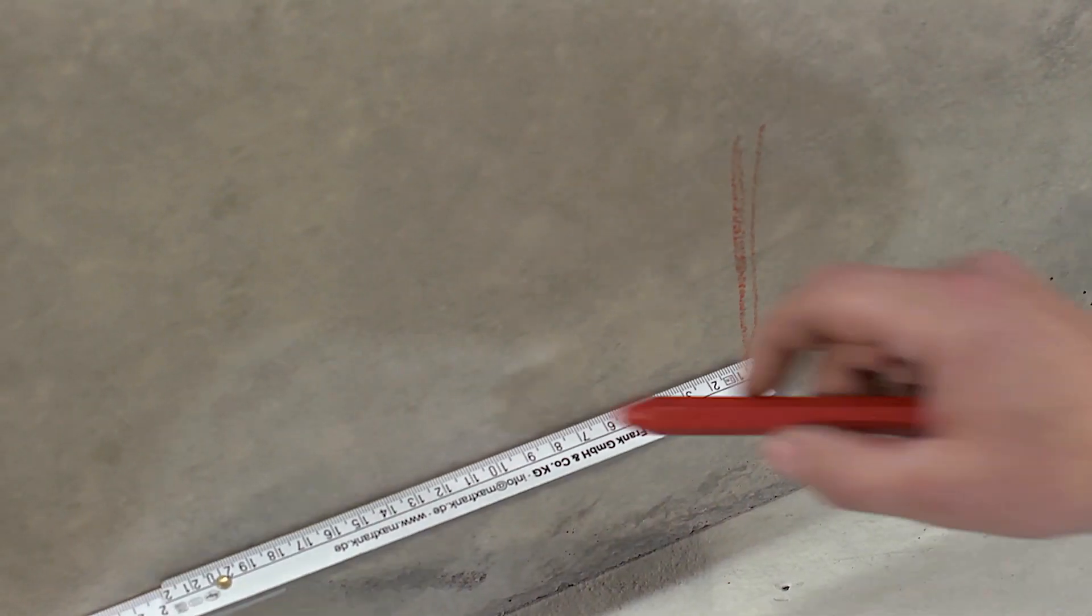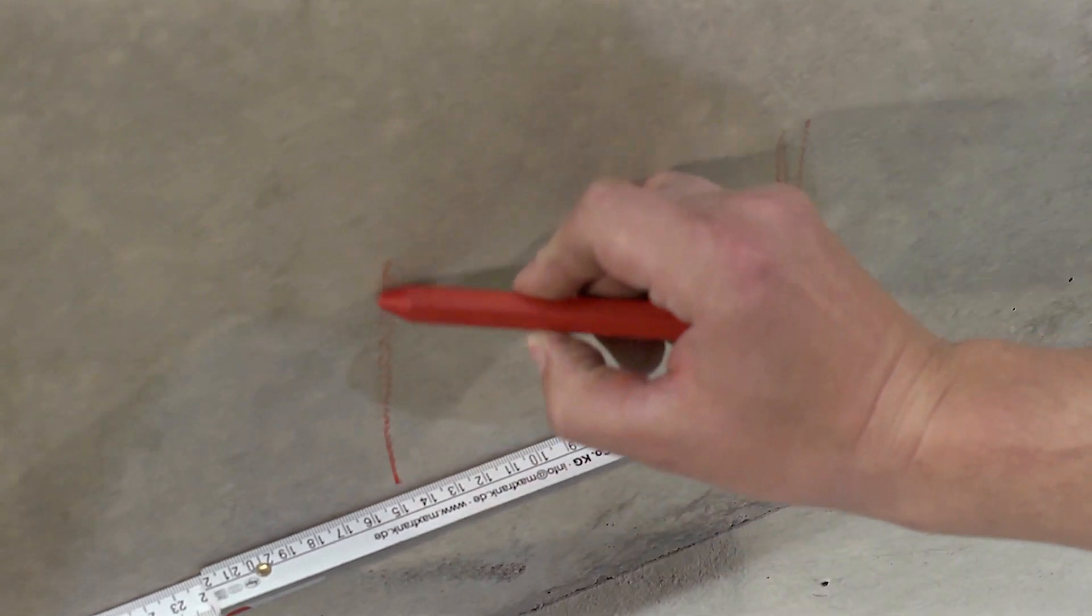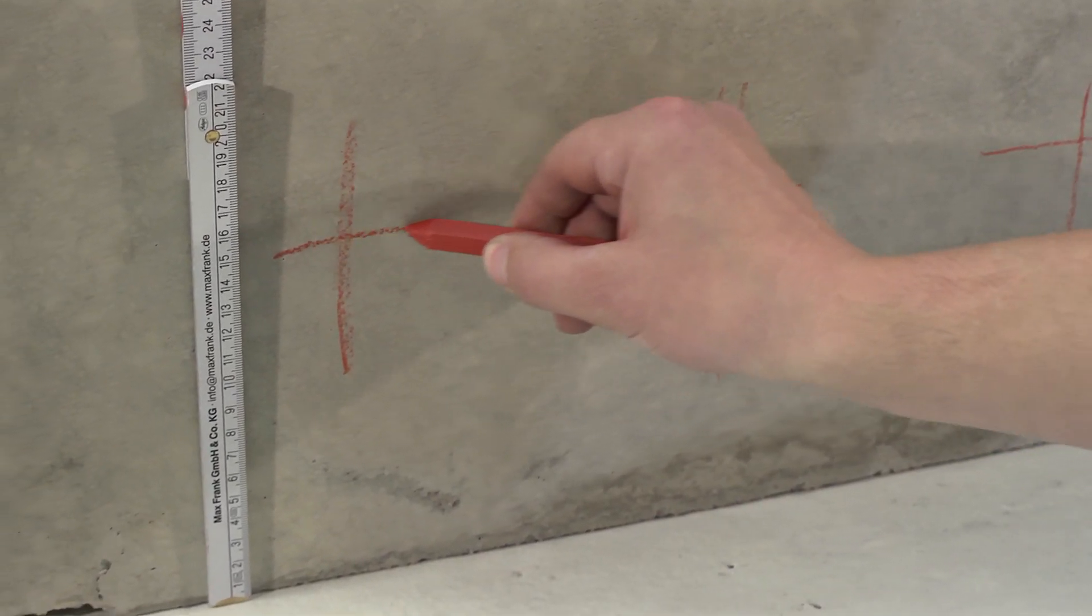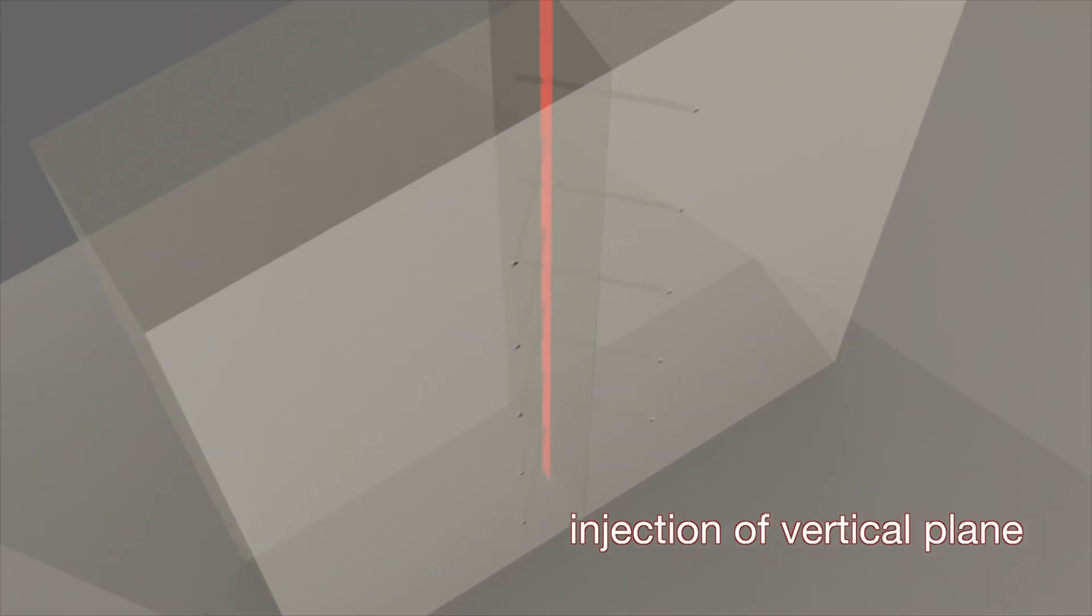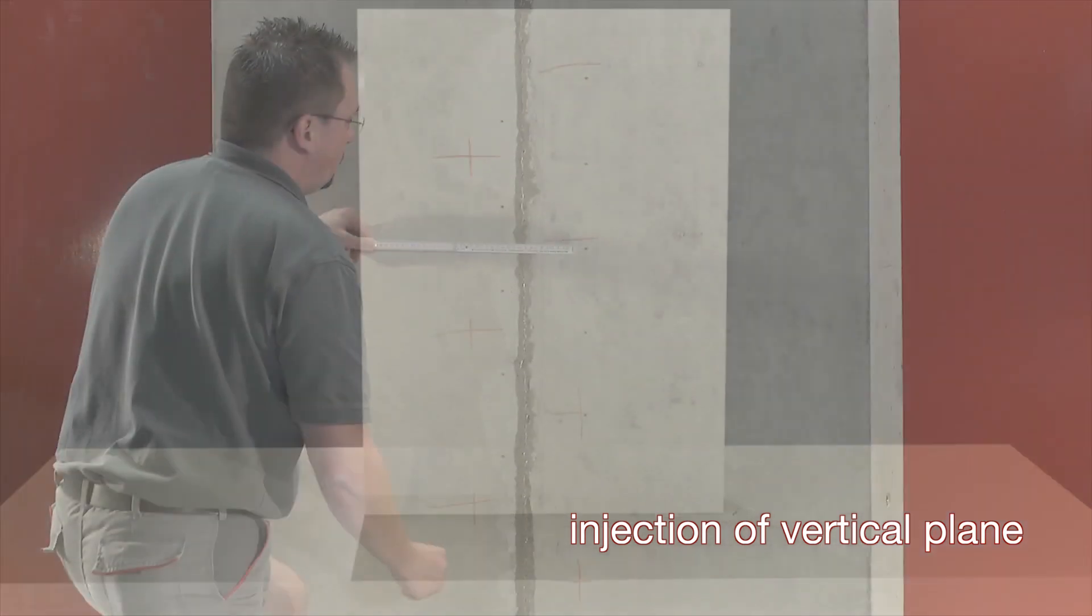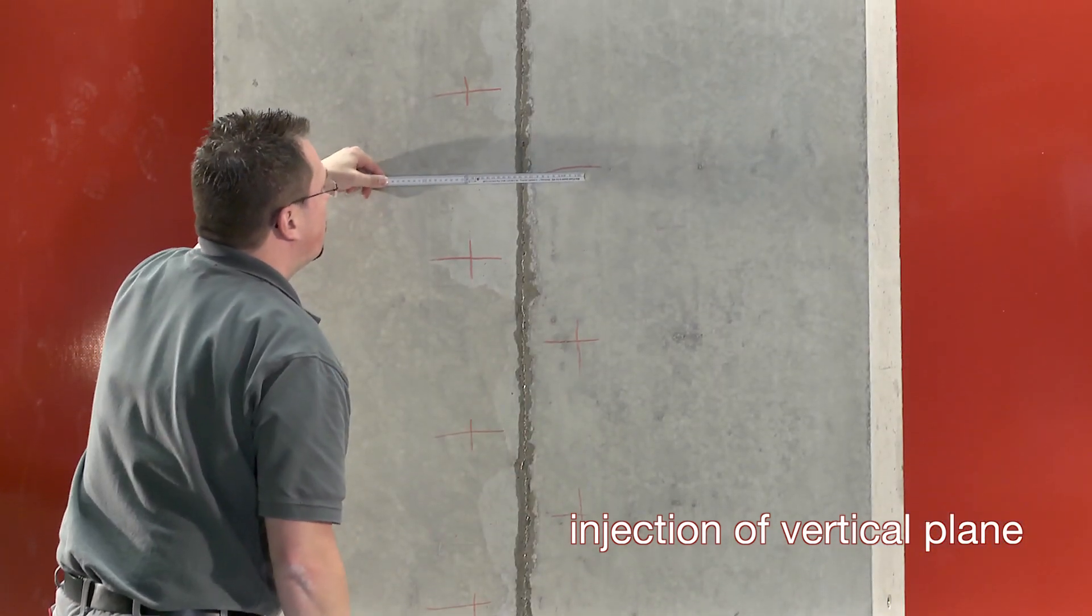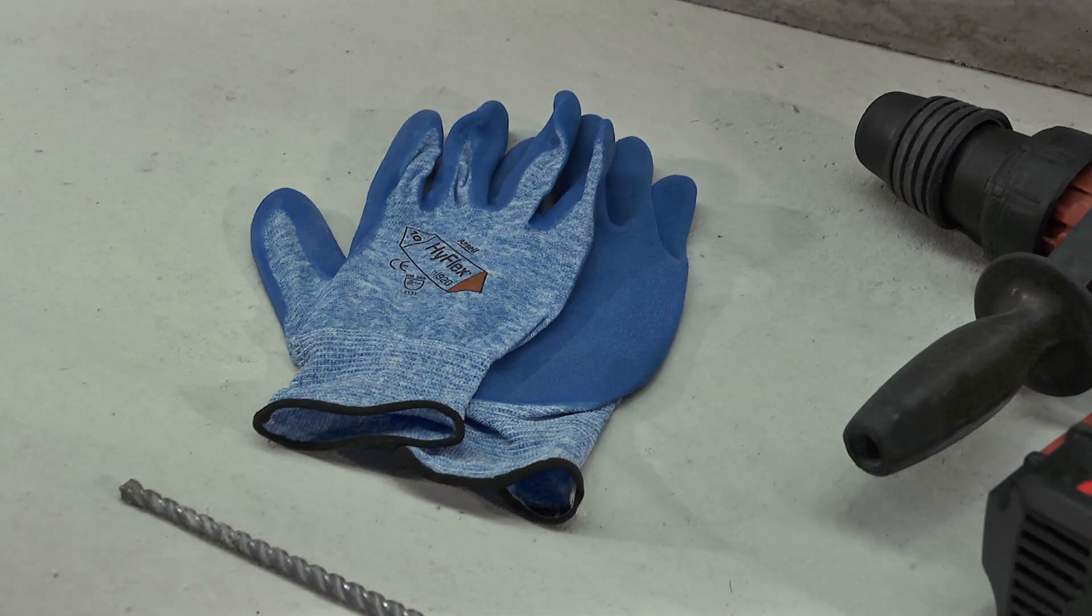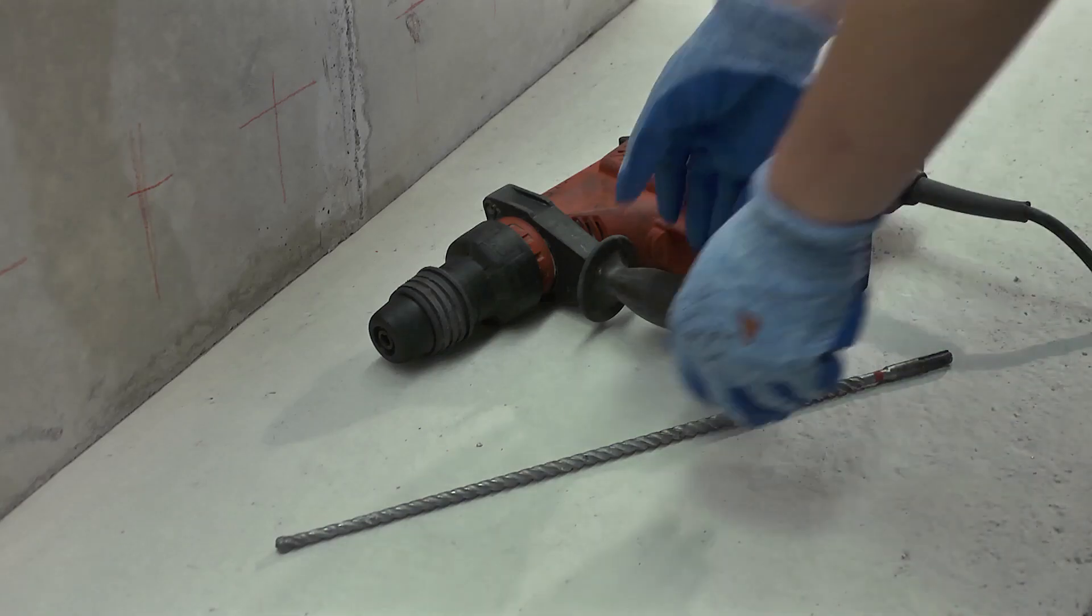Where joints and cracks are accessible on one side only, as in our given base slab to wall example, drill in single file. In other level surface applications, the injection points are positioned left and right alternatingly along the crack. The used drill bit diameter is selected according to packer size.